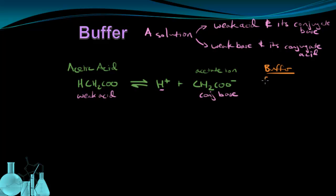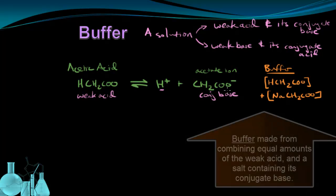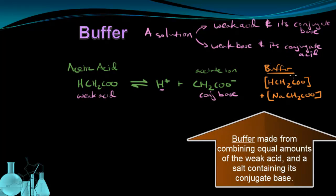So then how do we make a buffer knowing what the acid and base are? Well, we're going to take equal amounts of the weak acid, so some equal concentration of this. And we're going to combine it with the same concentration of some salt that contains a conjugate base. So I could use sodium acetate. Because this salt will dissociate in water and give me this acetate ion, the conjugate base. So I make the buffer by using equal amounts of the weak acid and a salt containing the conjugate base.